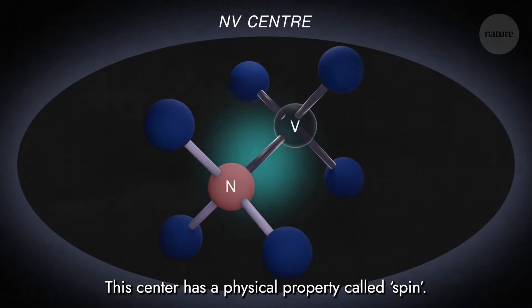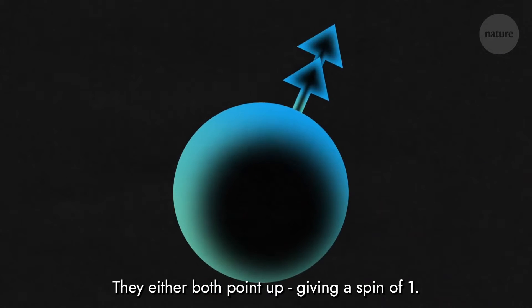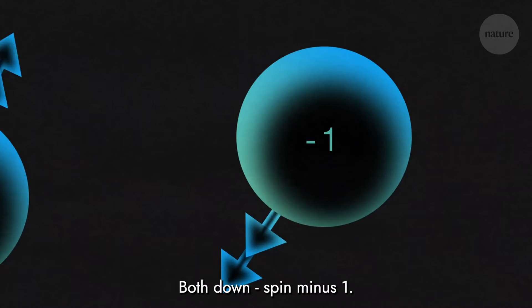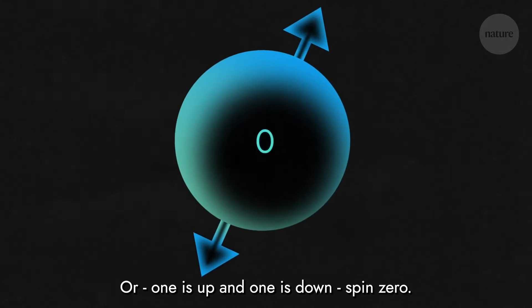This centre has a physical property called spin. The NV's spin is like two tiny compass needles. They either both point up, giving a spin of one, both down, spin minus one, or when one is up and one is down, spin zero.